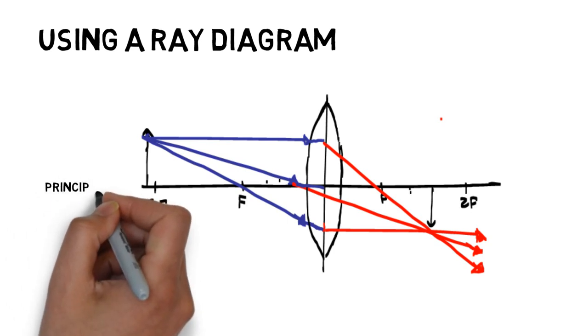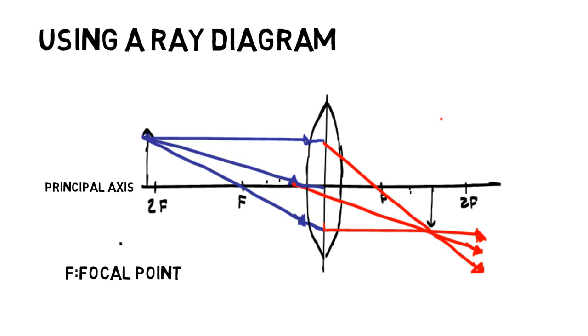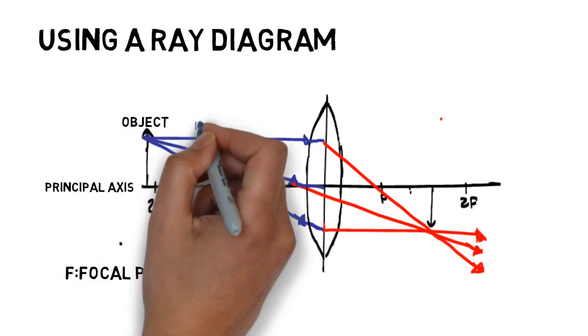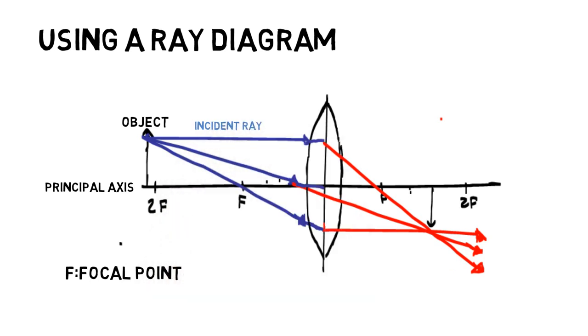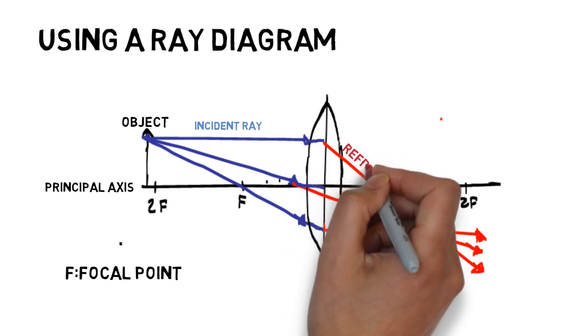Here is the object in which light bounces off of. The blue lines represent incident rays, which travel towards the lens where they are refracted and are now referred to as refracted rays, which are represented by red lines.